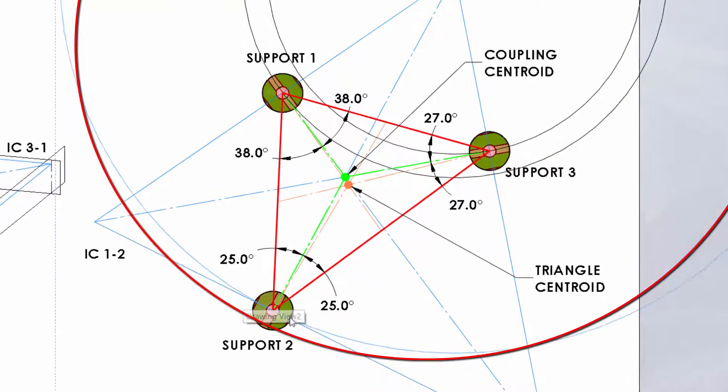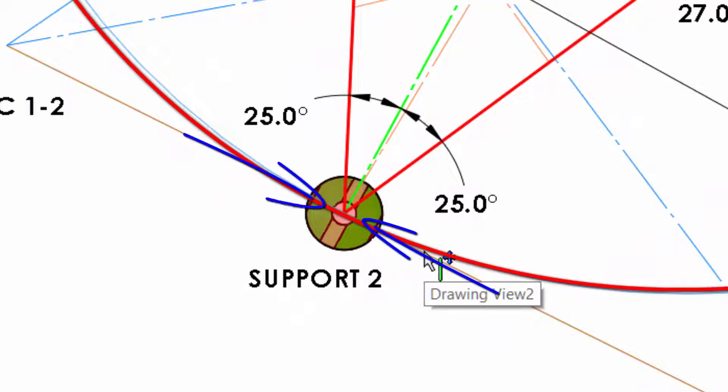Conversely, we see that the reaction forces at the third support are tangent to the arc, so they offer their full resistance.